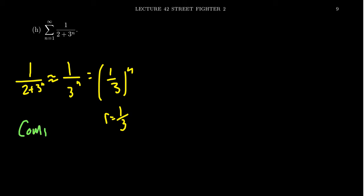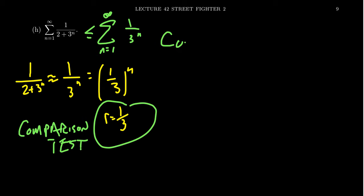It turns out in this situation, the genuine comparison test actually works out pretty nicely here. The actual comparison test, because if you remove the plus two in the denominator, you've made the denominator get smaller, which makes the fraction actually get bigger. So this series is actually comparable to n equals one to infinity of one over three to the n, which is then a geometric series, which is convergent because its ratio is small. So you get that this is likewise convergent.